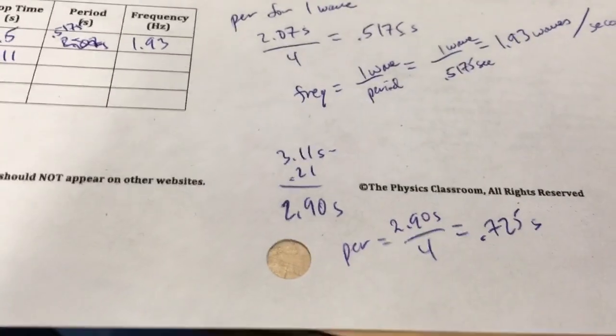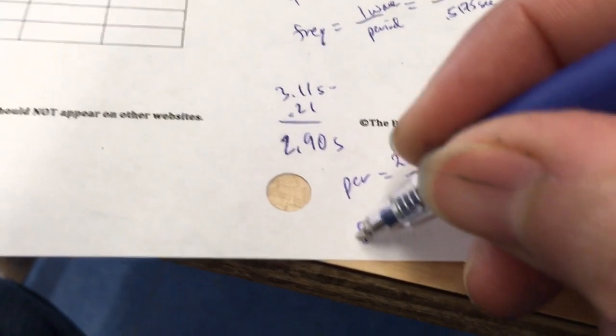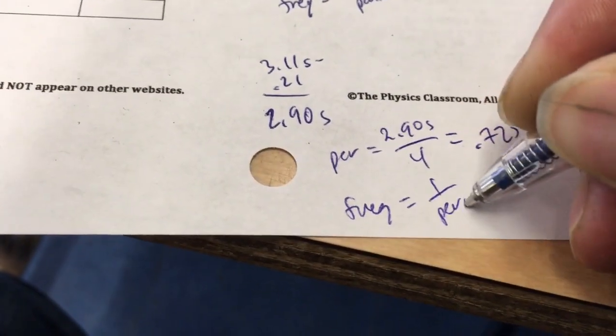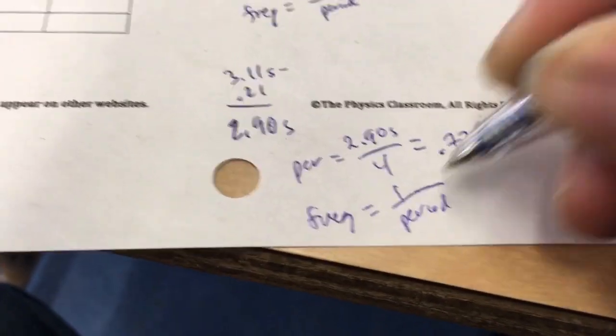And we'll let the old internet take care of that. So 2.9 divided by 4, 0.725 seconds. So that's the period for one wave.